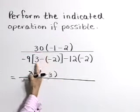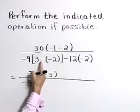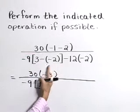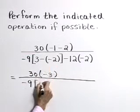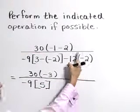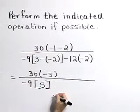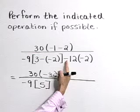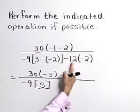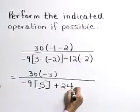In the denominator, let's start with this grouping symbol. 3 minus a negative 2 becomes 3 plus 2 or 5. And we can also go ahead and perform this multiplication at the same step because we have things separated here by our minus sign. I'm going to think of this as negative 12 times a negative 2 or a positive 24.